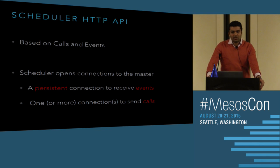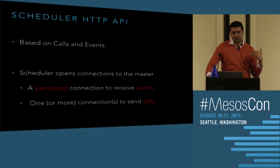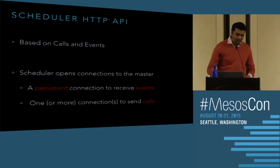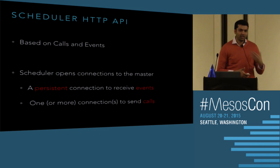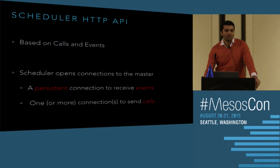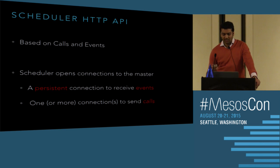The scheduler HTTP API is based on fundamental building blocks called calls and events. Calls are things the scheduler sends to the master; events are things the master sends back to the scheduler. Status updates and offers are events, whereas launch task or kill task are calls. The scheduler opens connections to the master — the master doesn't open connections back. It uses the same connection to send back events. A typical scheduler opens a persistent connection, on which the master sends a streaming response containing all events. For other calls, the scheduler can use one or more additional connections.